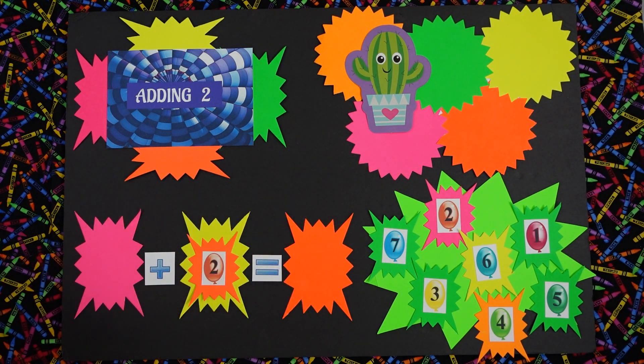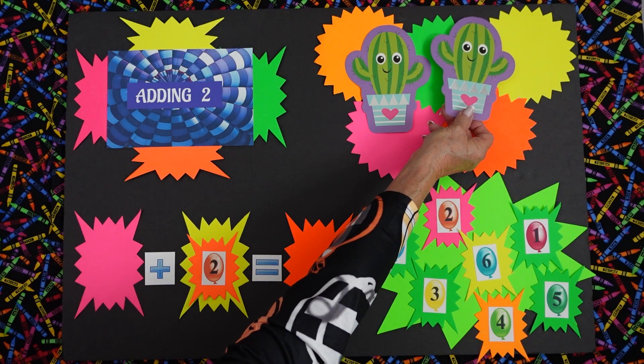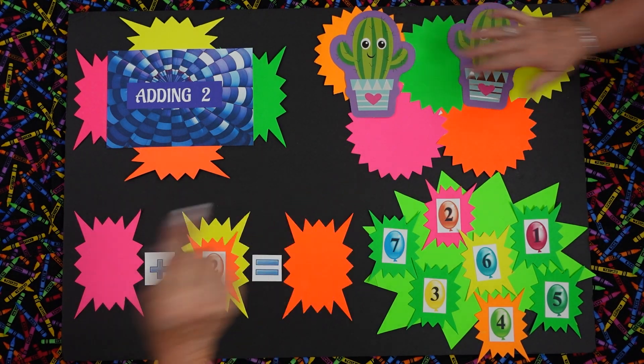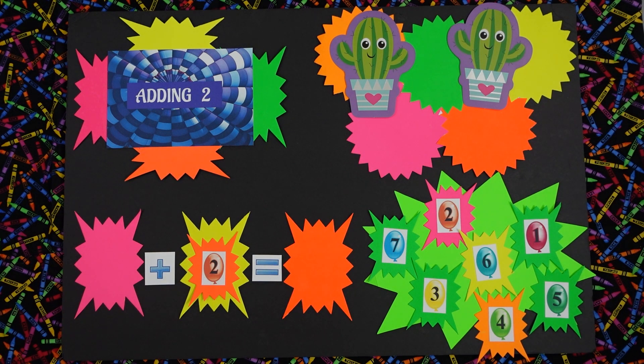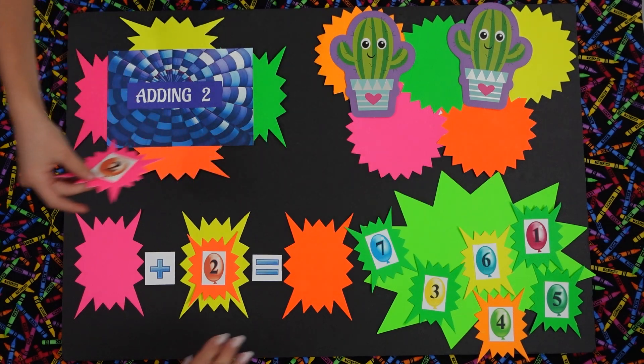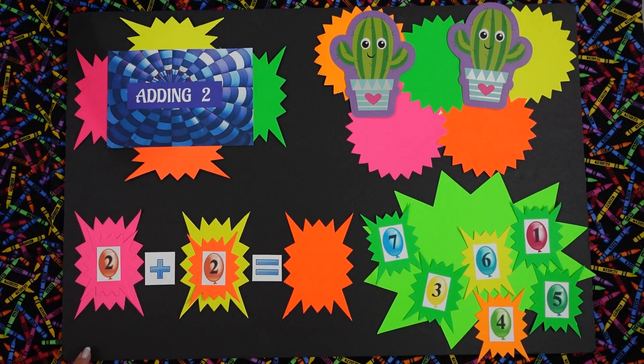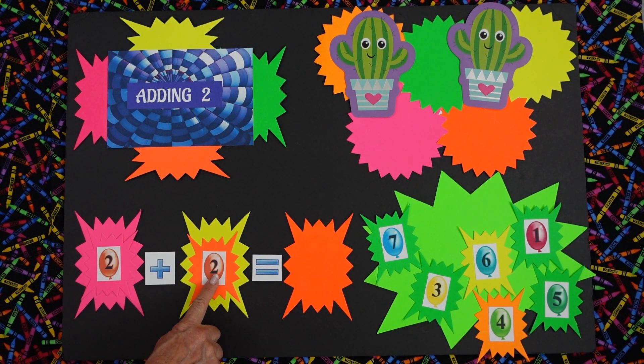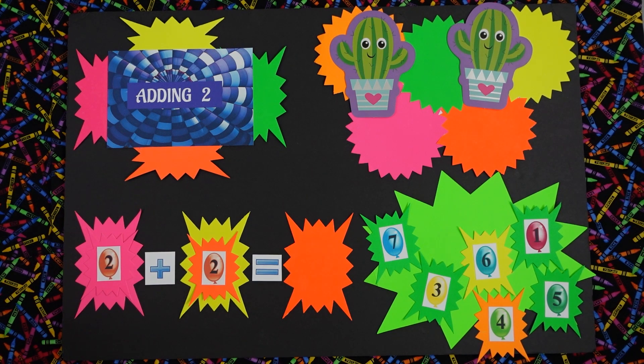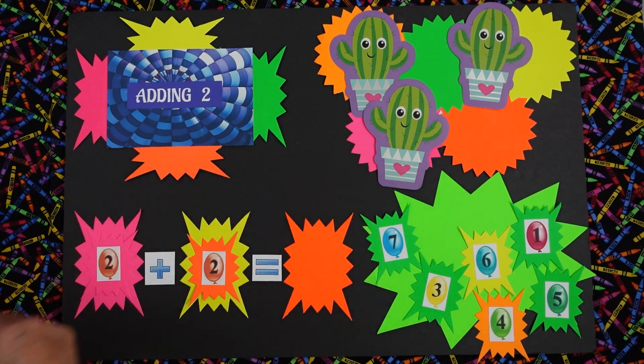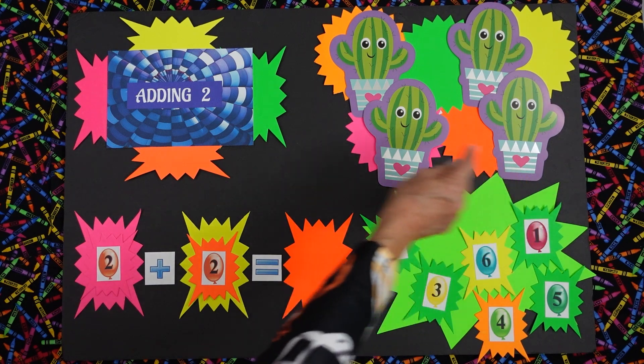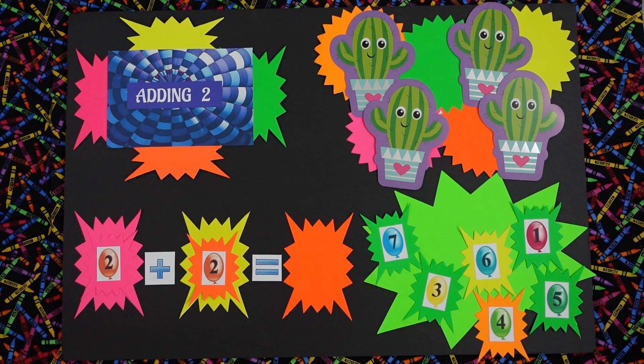We have two fun little heart cactuses. And how many, Jonathan, are there? Two. Two. Can you pick up the two sweetheart and put it in the right place? Sure. Perfect. Now if I add how many more? Two. Two more cute little heart cactuses. All together we have how many, Jonathan? Four. Four.